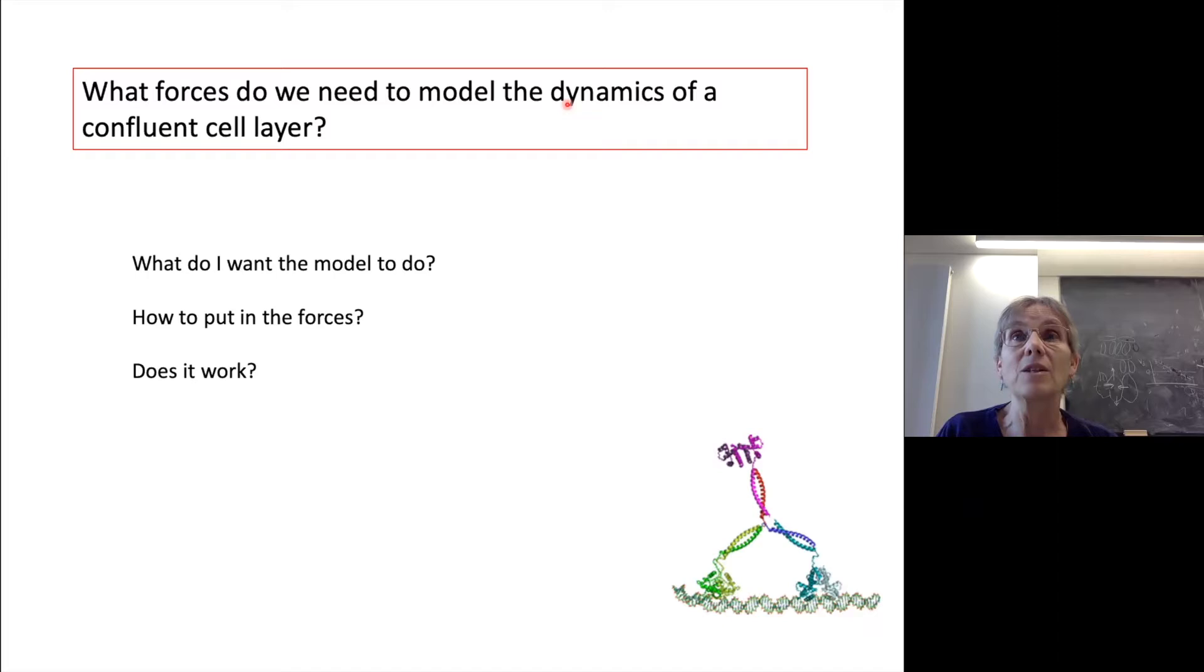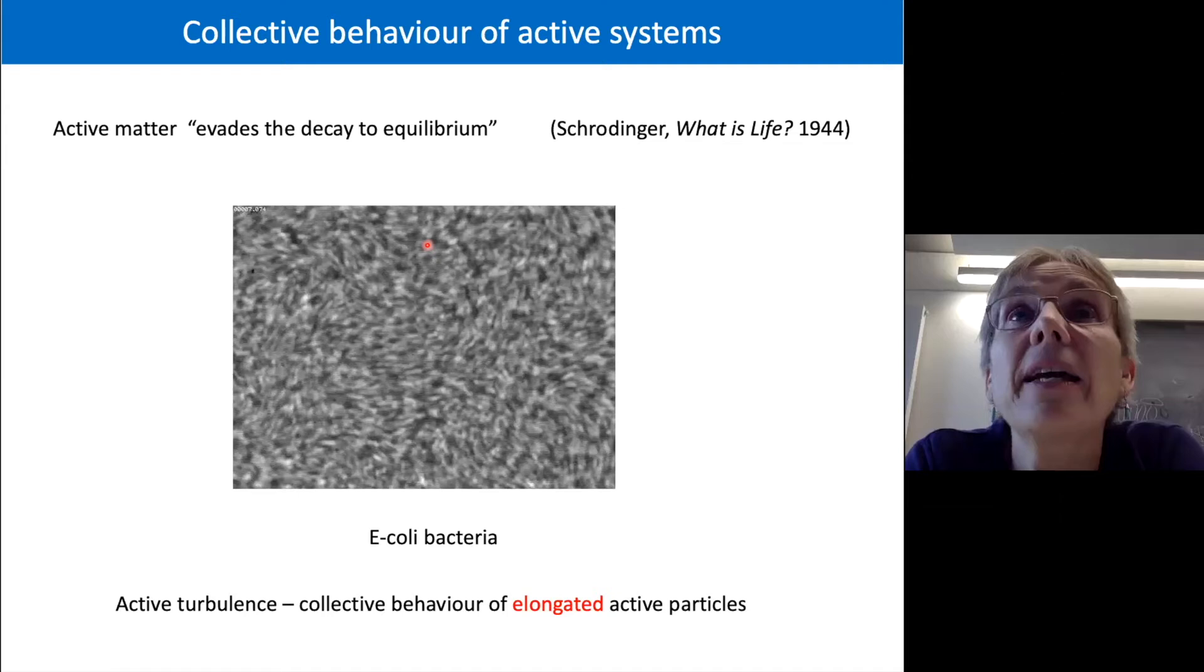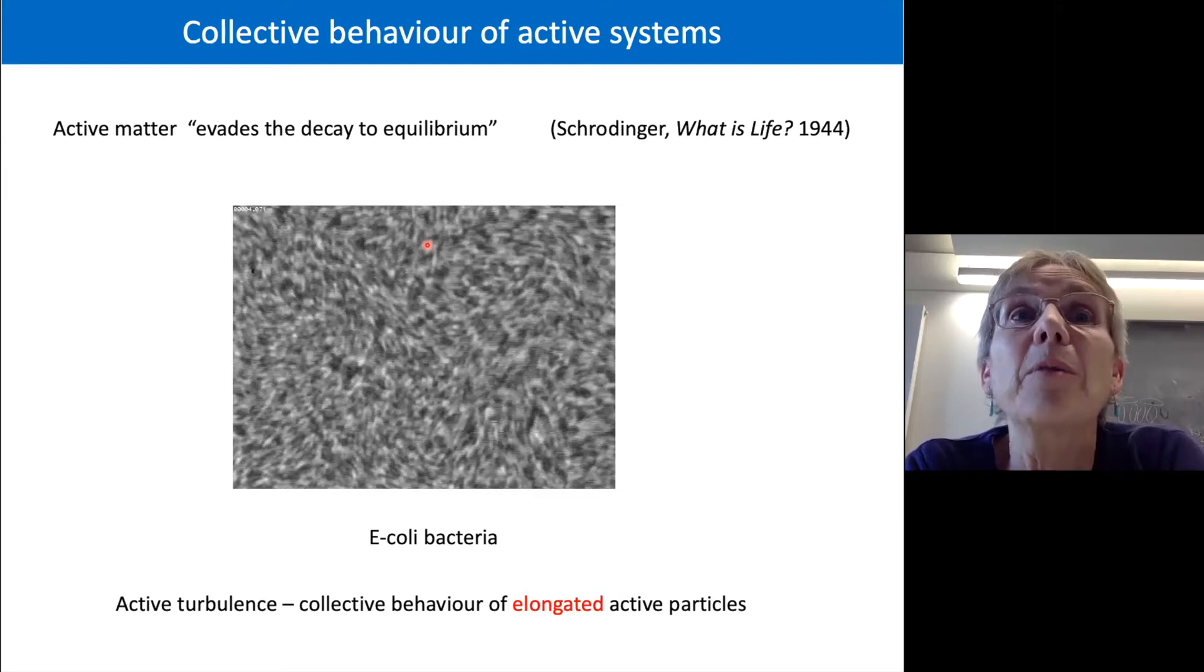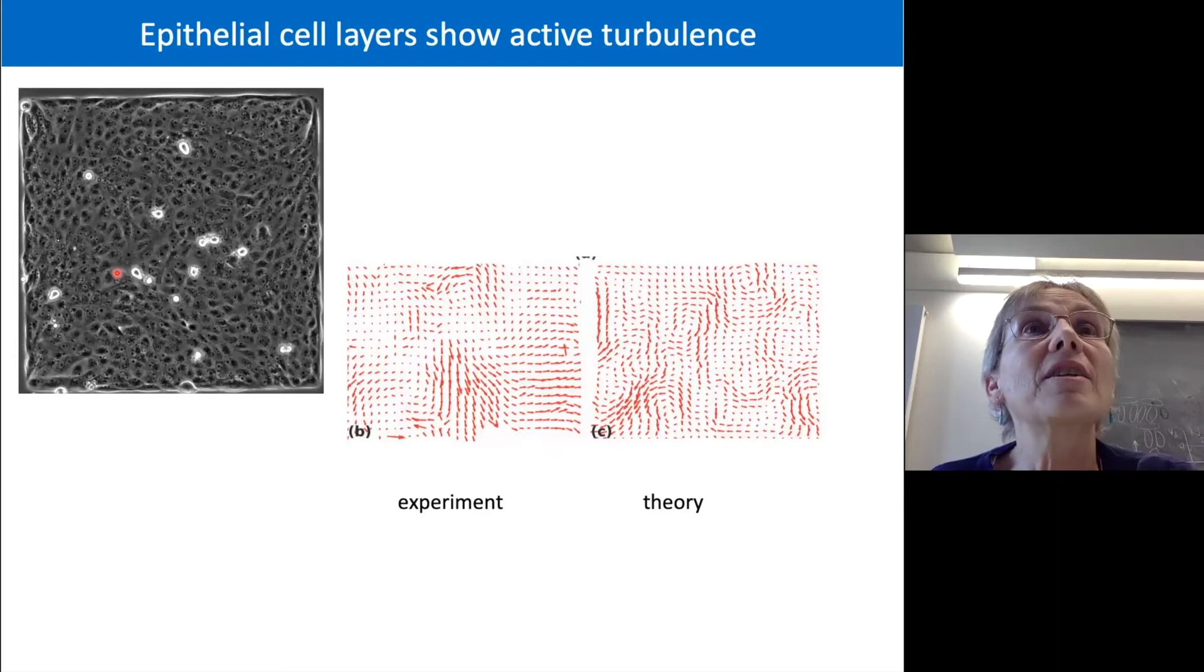And the first thing you see when you put these particles together, for example, if you put a load of bacteria together, is a state like this. And so what you're seeing is a state where these bacteria are moving around. And you're seeing lots of vorticity, lots of swirling, turbulent-like behavior. And that state has become known as active turbulence.